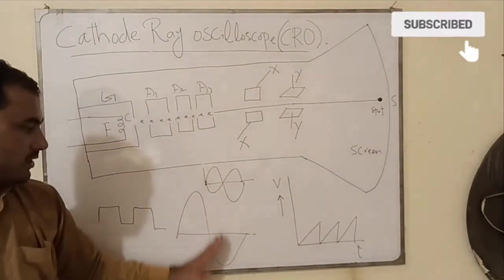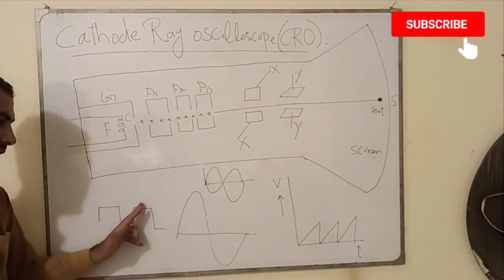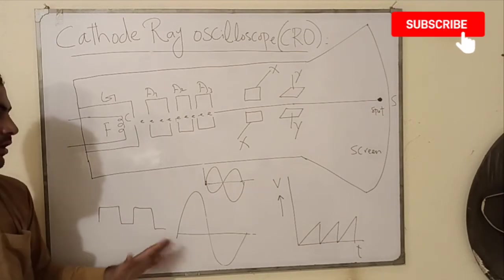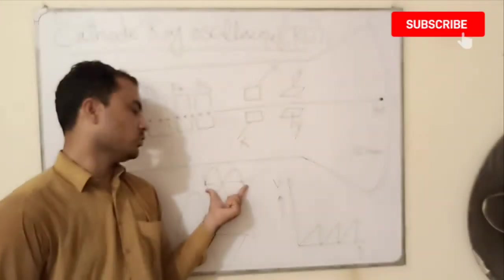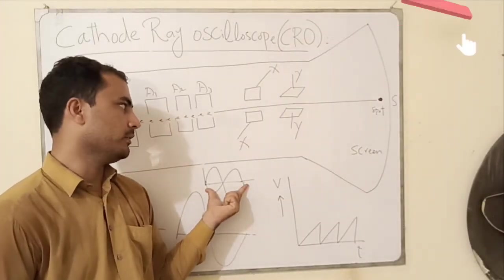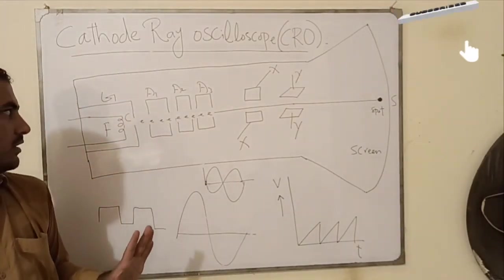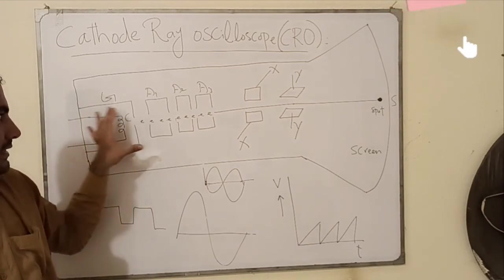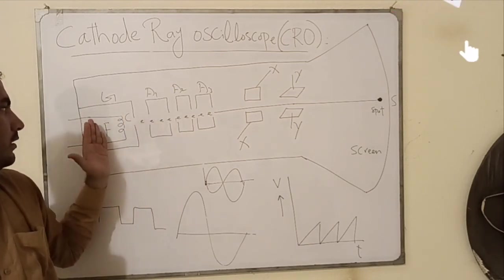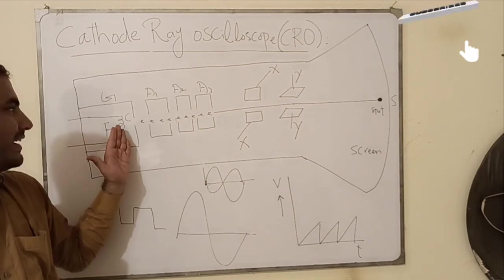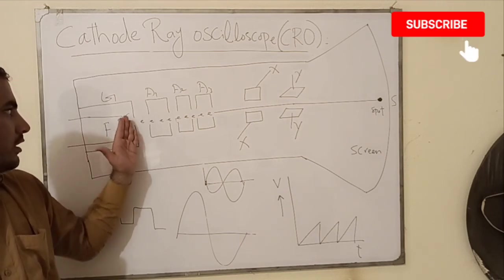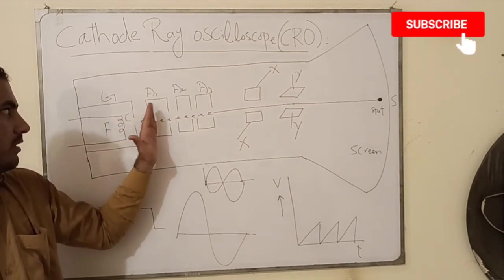For example, in this case we can obtain the waveform of particular voltage signal which is either in sinusoidal form or in sawtooth form or rectangular or square waves. We can also show the difference between two electrical signals. So this is a high-speed graph plotting device.